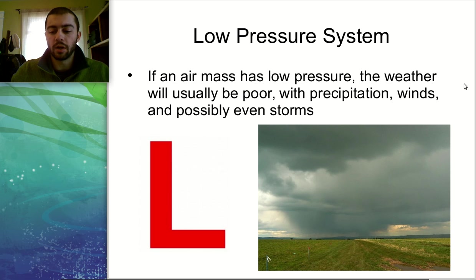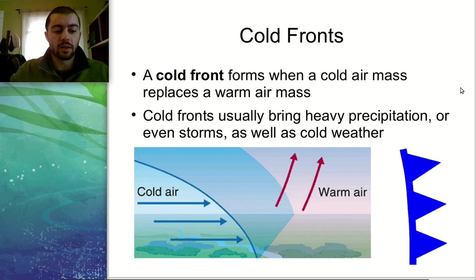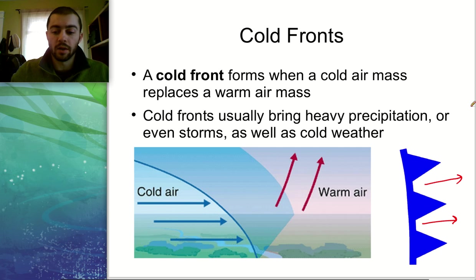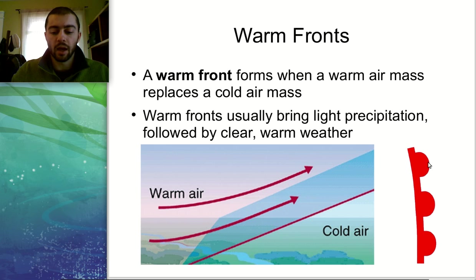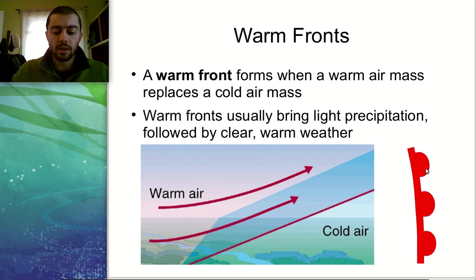Let's go over the different symbols you might see on a weather map. For a cold front, you're looking at a blue line with pointy triangles. If you see one of these moving across a weather map, that indicates a cold front coming in that direction. For a warm front, it's the same line except red, with little half circles instead of triangles. These fronts always move in the direction their symbols are pointing — so if the semicircles point to the right, the front is moving to the right.